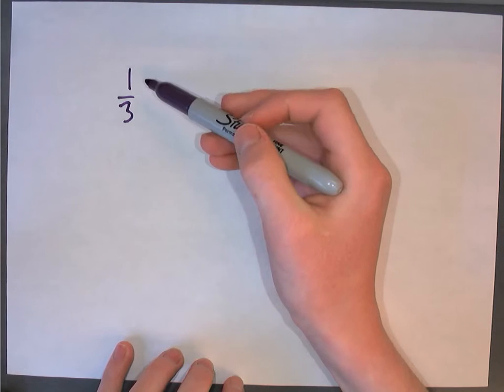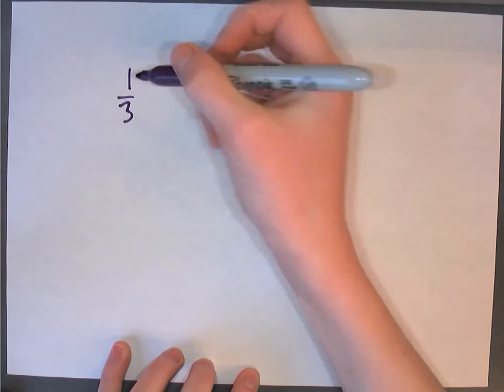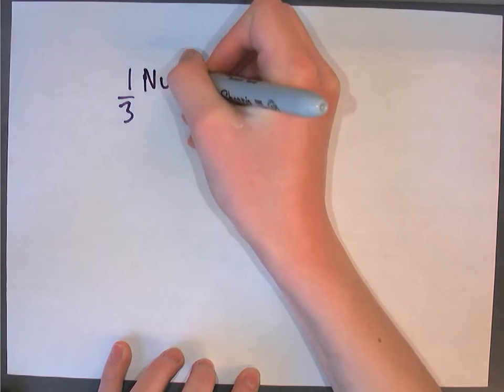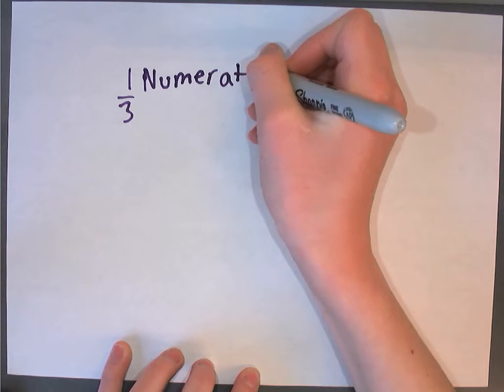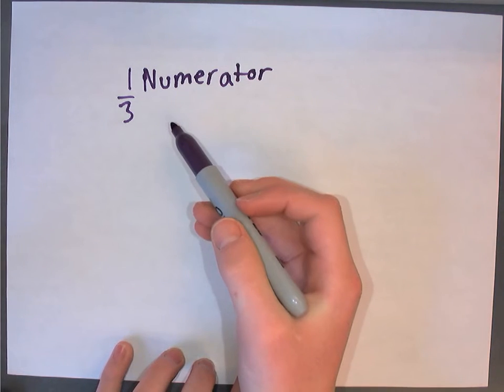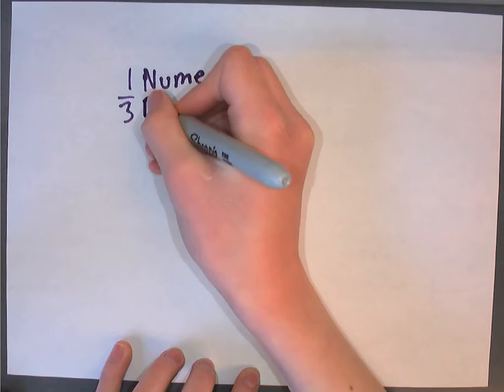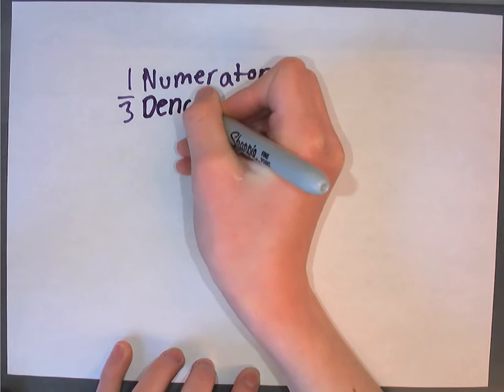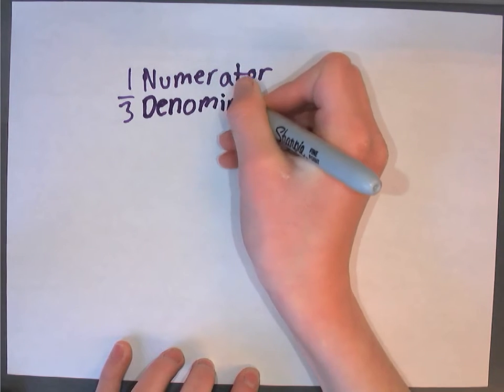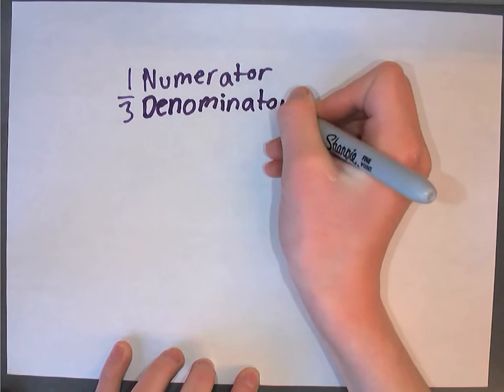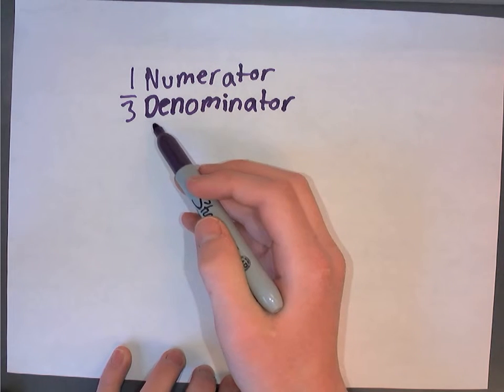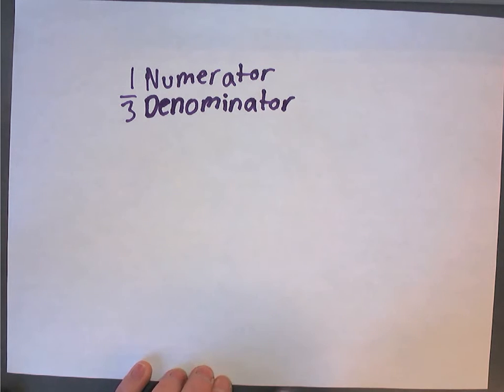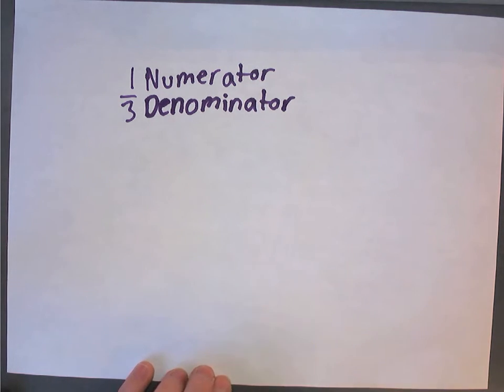This top number is called a numerator. This bottom one is called a denominator. How I remember which one is the denominator is the d on the word denominator can be for down, and that is where the denominator is, down on the fraction.